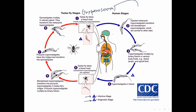The metacyclic trypomastigotes transform in the bloodstream into bloodstream trypomastigotes. These trypomastigotes multiply by binary fission — the cell pinches and divides into two cells, similar to bacterial cell division. They multiply in various body fluids including blood, lymph, and spinal fluid. They are stored in lymph nodes and move through blood and lymph vessels. At this point we are in the diagnostic phase — we can detect trypomastigotes by taking a blood sample from the infected individual.